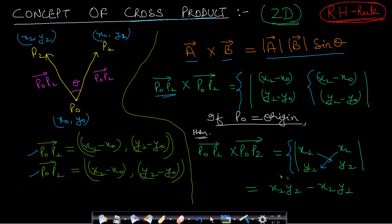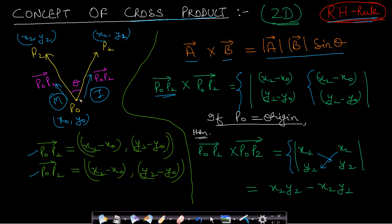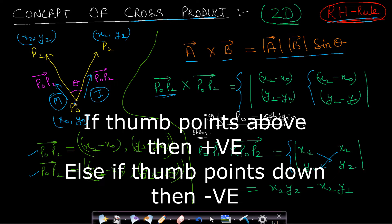You can use the right-hand rule to find the direction — that is, whether the cross product of two vectors will be positive or negative. We take P0-P1 as our index finger and P0-P2 as our middle finger. The direction your thumb points determines whether the value is positive or negative. In this case it comes out to be positive — you can try it with your hand.